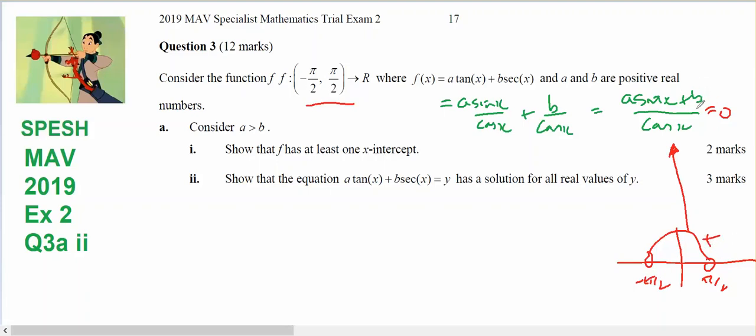And my numerator can equal zero when sine(x) equals -b/a, and x will be the inverse sine of -b/a. And since a is bigger than b, that's a proper fraction. Therefore, there'll be a solution for x.